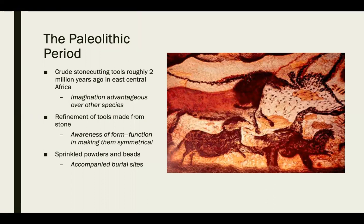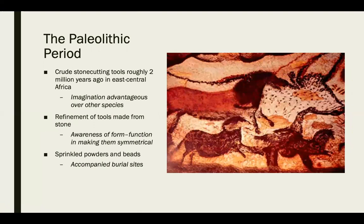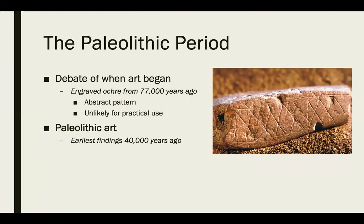There are crude stone cutting tools roughly 2 million years old found in East Central Africa. The imagination we see here is an obvious advantage we start to see over other species. There's refinement of these stone tools, and the awareness of form and function is making them symmetrical. We also see pigmentation from sprinkled powders and beads accompanying different burial sites. There's really a debate about where art started — we see this piece of engraved ochre from about 77,000 years ago showing an abstract pattern, unlikely used for anything practical other than showing imagination and creativity.